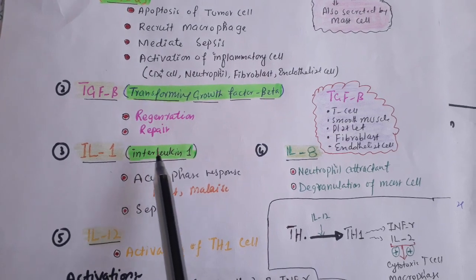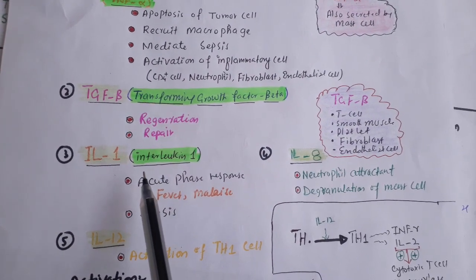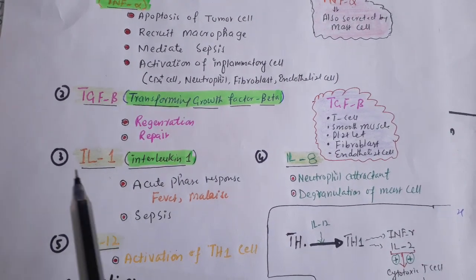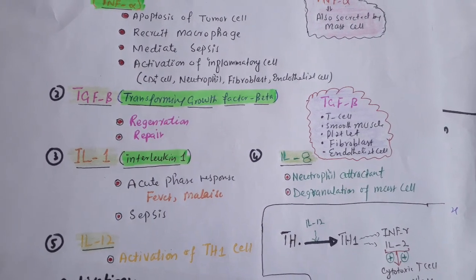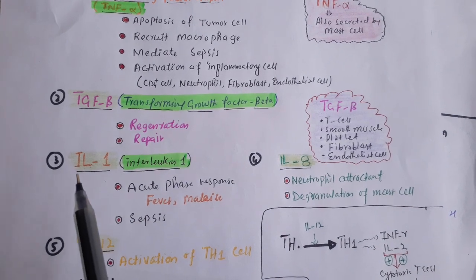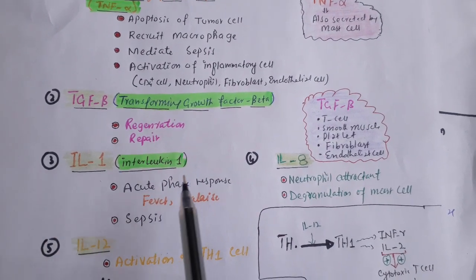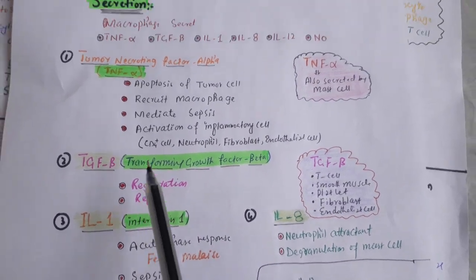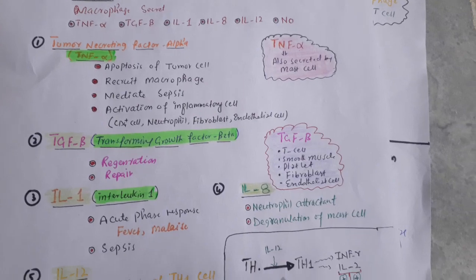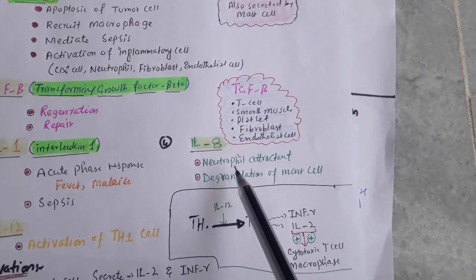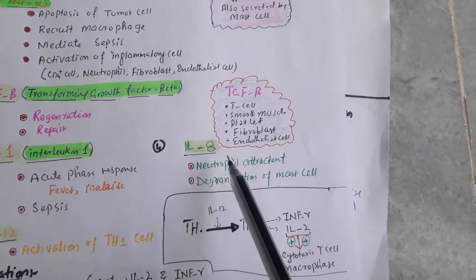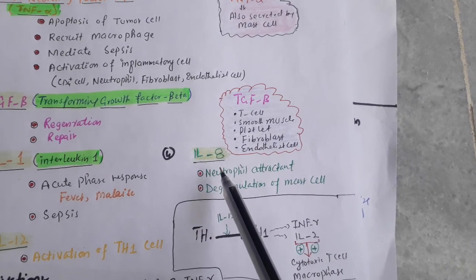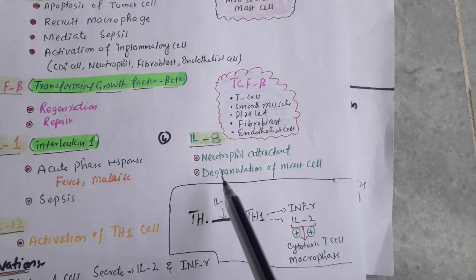Interleukin 1 is responsible for the acute phase response, which means it is responsible for fever and malaise. It also mediates sepsis together with TNF-alpha. Interleukin 8 is a neutrophil chemoattractant factor and also mediates the degranulation of mast cells.